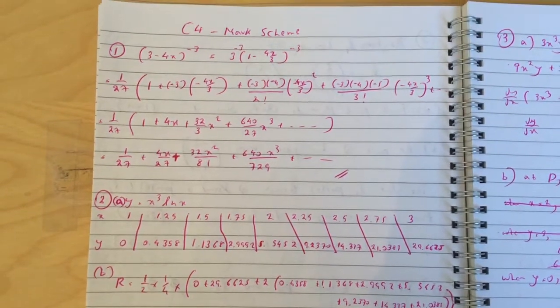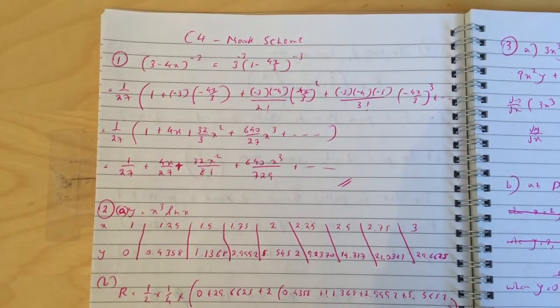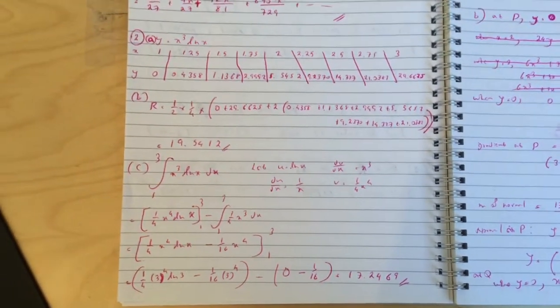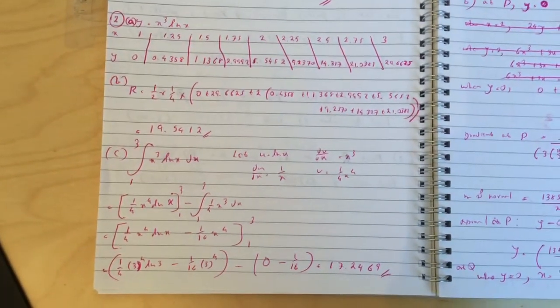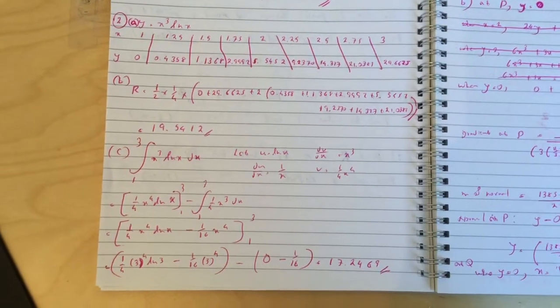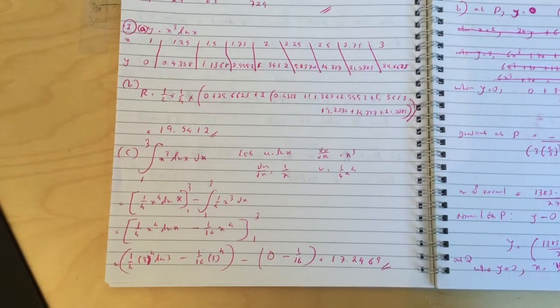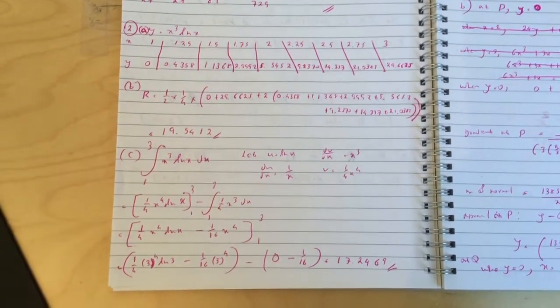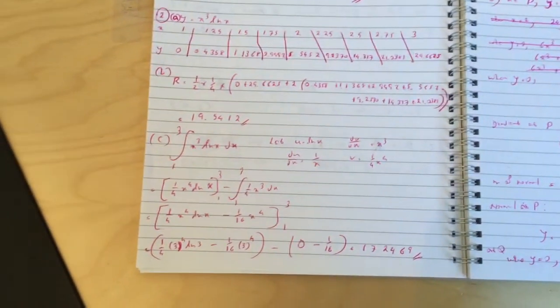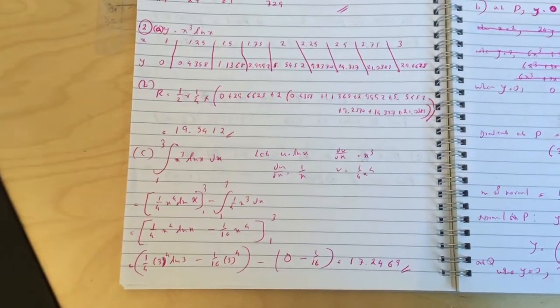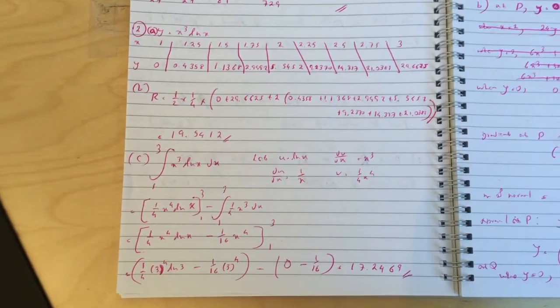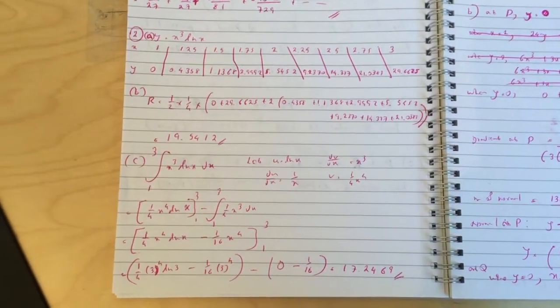And you get this line here. Question 2, obviously you had to work out all the points so I'm just going to hold it here, hopefully you can work out all the values. Then you use the trapezium rule to get the area which is 19.5412, and if you use integration by parts you get the area at 17.2469. So you can see it's pretty close to each other.